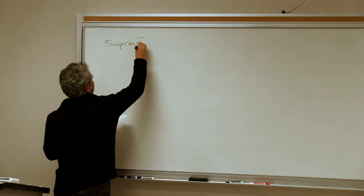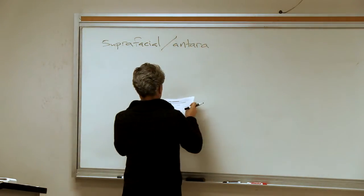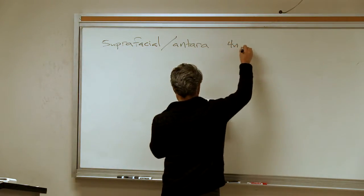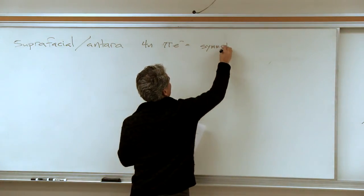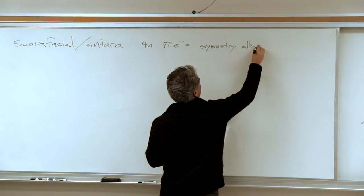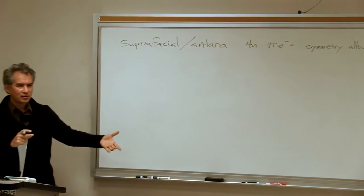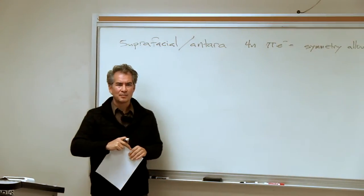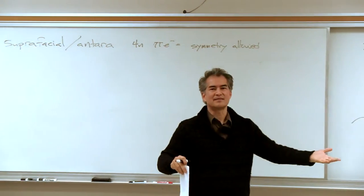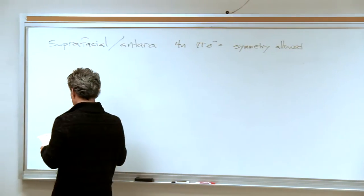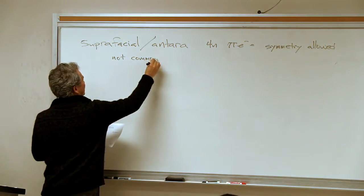What about four-electron processes? We mentioned this already when we talked about orbital symmetry. If one of the components reacts antarafacially, that is allowed by orbital symmetry. I showed you a 4+4 cycloaddition, but it requires a weird geometry where one of the two reactants has to react simultaneously on both the bottom face and the top face — and that's just not common.